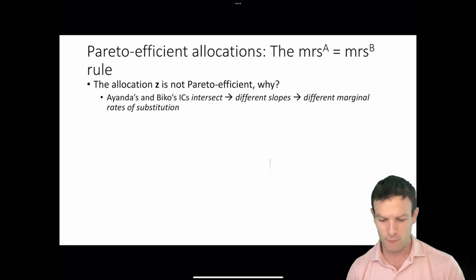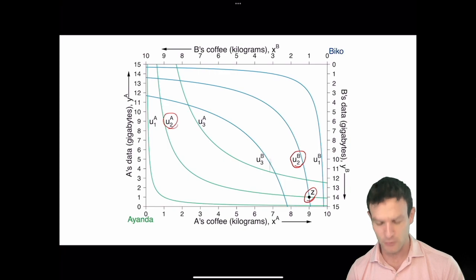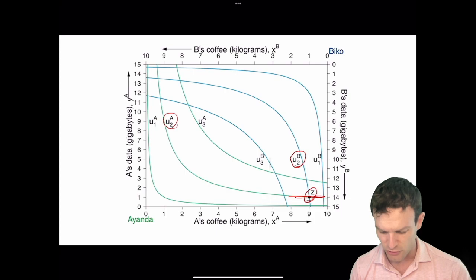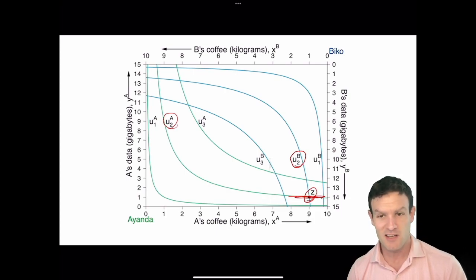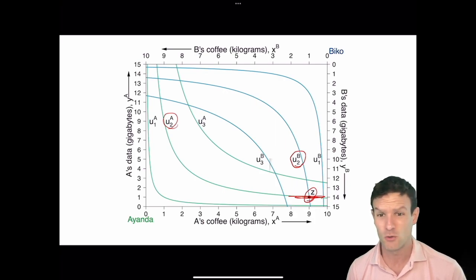If we go back to the figure, at point Z, if we're describing Ianda's indifference curve, hers are very flat at that point. That means she has a low marginal rate of substitution — she doesn't want to pay much Y in order to get an additional unit of X.